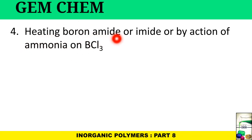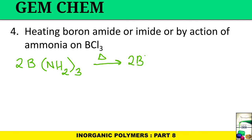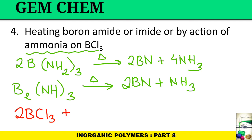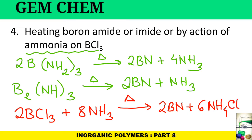The fourth method involves heating boron amide or the action of ammonia on BCl3. The reactions are: 2B(NH2)3 → 2BN + 4NH3 on heating; 2B(NH3)3 → 2BN + NH3 on heating; and 2BCl3 + 8NH3 → 2BN + 6NH4Cl on heating.